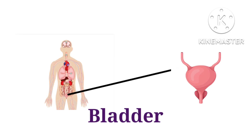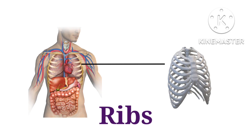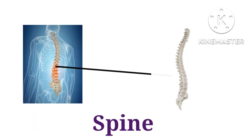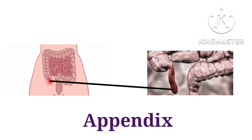Blood. This is blood. Bladder. This is bladder. Bone. This is bone. Rib. This is rib. Spine. This is spine.